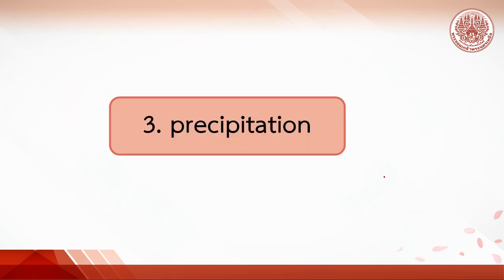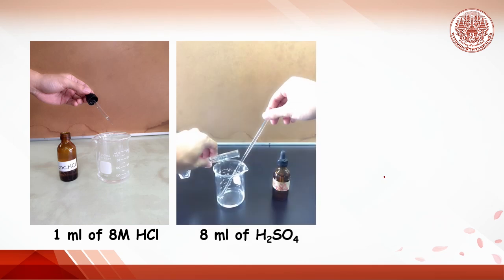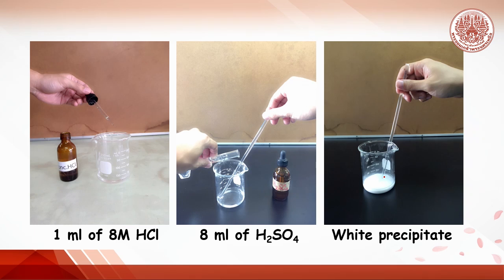We are on the significant step, called precipitation step. First, 1 mL or 20 drops of 8-molar hydrochloric acid is added, followed by 8 mL of sulfuric acid. The white precipitate occurs right away when sulfuric acid is added.